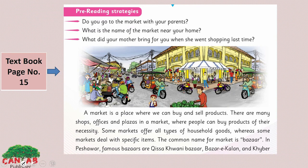We have started Unit No. 3 and read 4 paragraphs in the previous lesson, so we will continue from here. We previously read about the famous markets of Peshawar, Balochistan, Khoita, and Karachi, and learnt what a market is — a place where we can buy and sell products, with many shops, offices, and plazas. People come to the market to buy things.